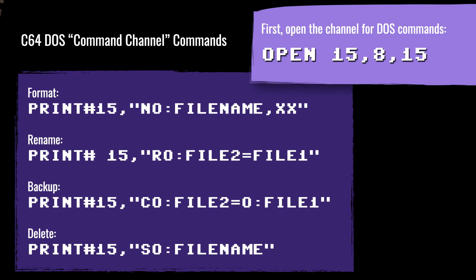You access the user file using the command channel. If you do OPEN 15,8,15, that will open a command channel that allows you to communicate with the operating system. The first number is simply an identifier, the second is the device number, and the third is the secondary number. So to format a disk you can do PRINT and then N: filename, ID. You can rename a file, back up a file, and delete a file — all using these DOS commands. They're not intuitive, but they do exist and come in very handy when working on the Commodore 64.